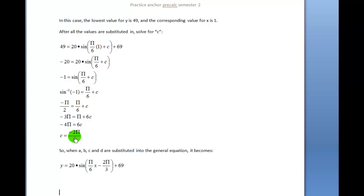So when I substitute A, B, C, and D into the general equation, it becomes y equals 20 times the sine of π over 6x minus 2π over 3 plus 69. Next I'm going to show you on the calculator how to do the exact same thing.